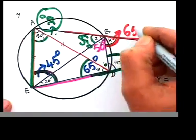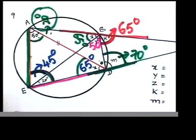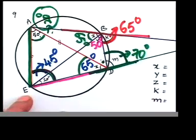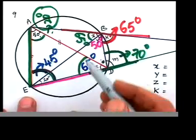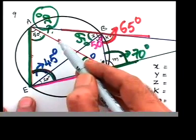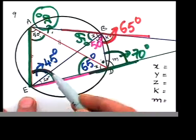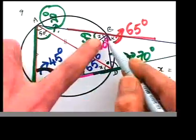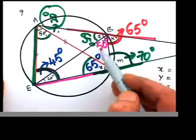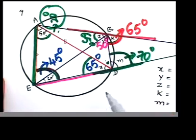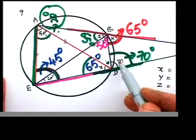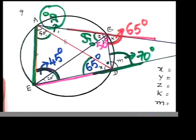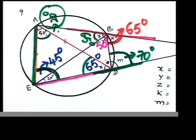So k = 65°. This is how you apply all the rules in one problem. The concepts used were: isosceles triangle base angles, angles in the same segment, and exterior angle of a cyclic quadrilateral — three or four rules applied in one question.